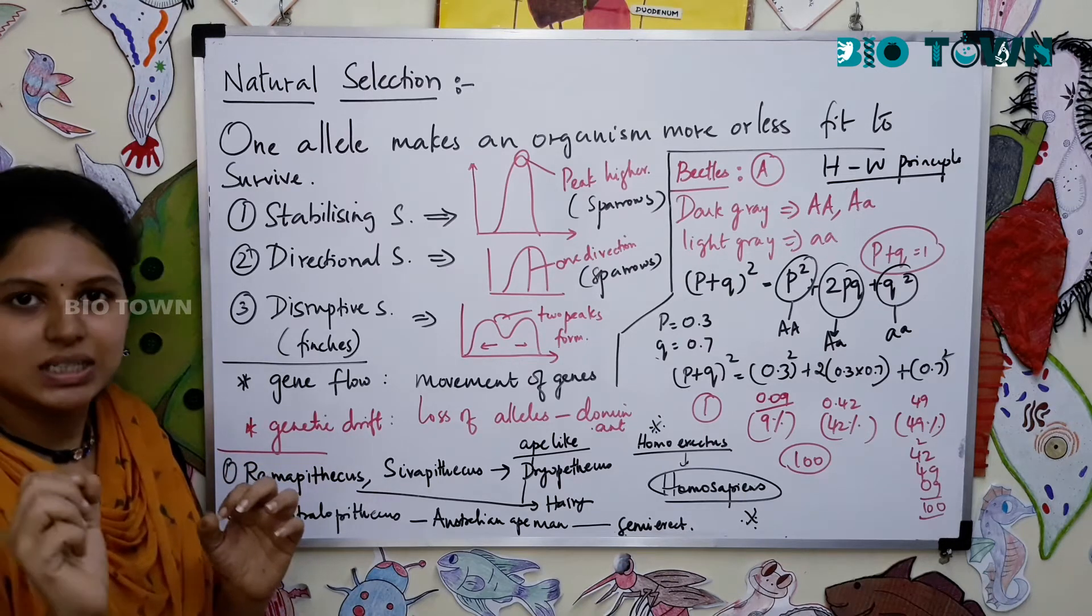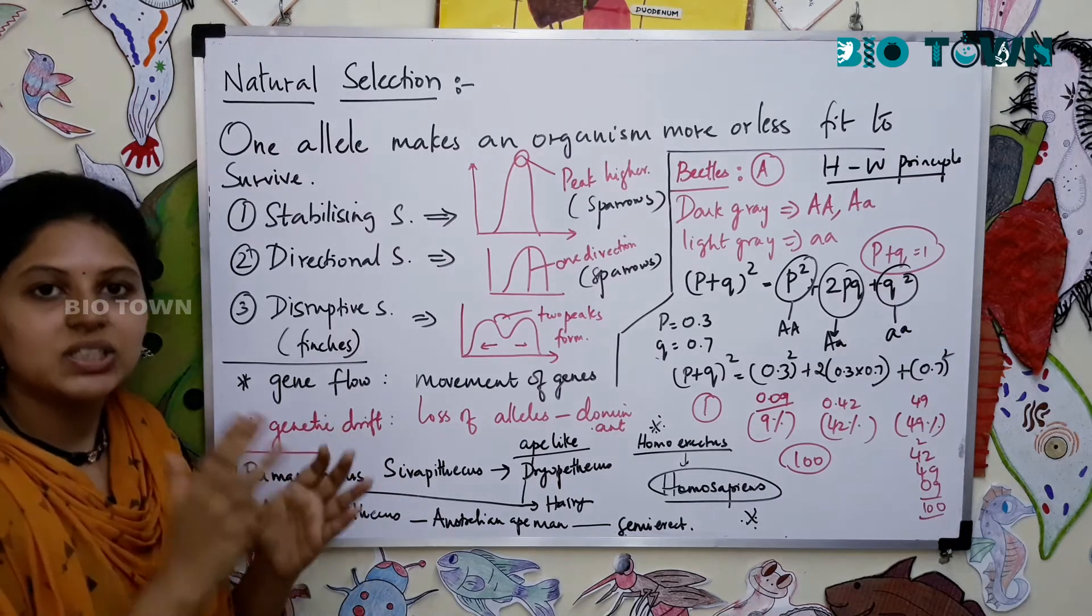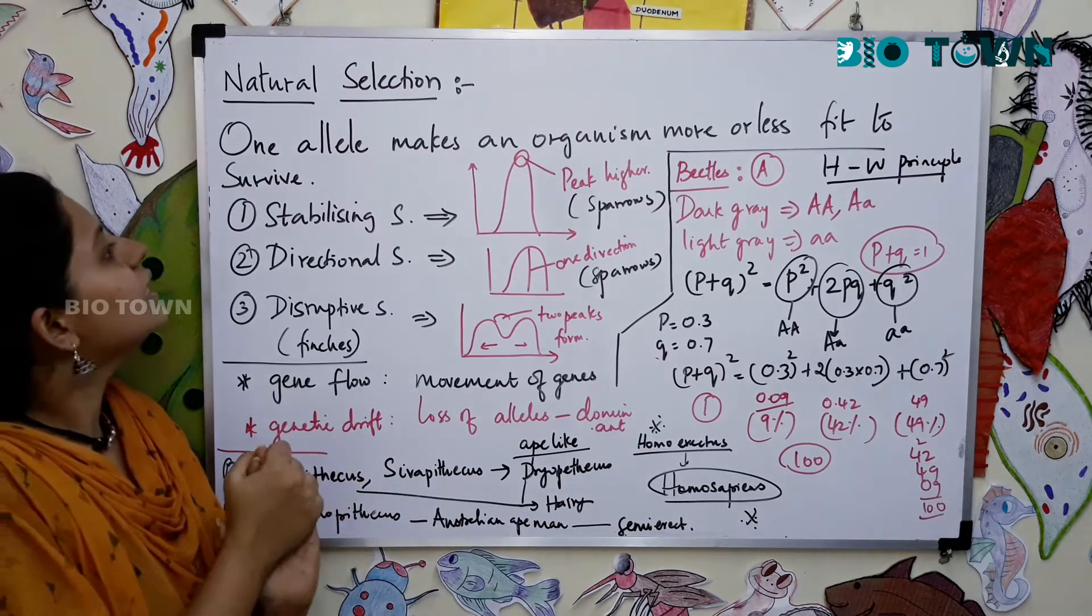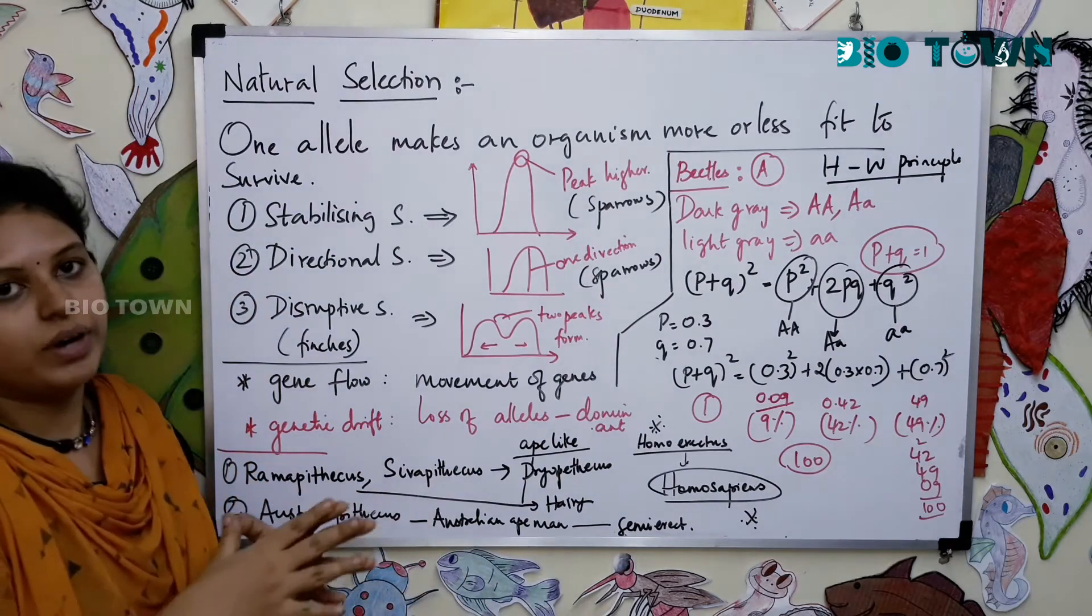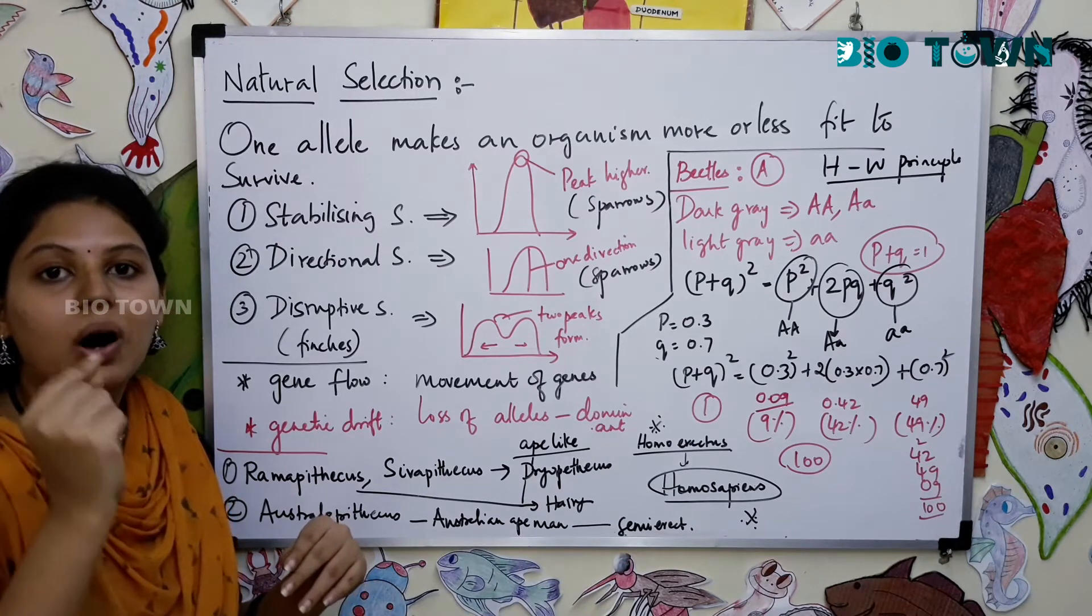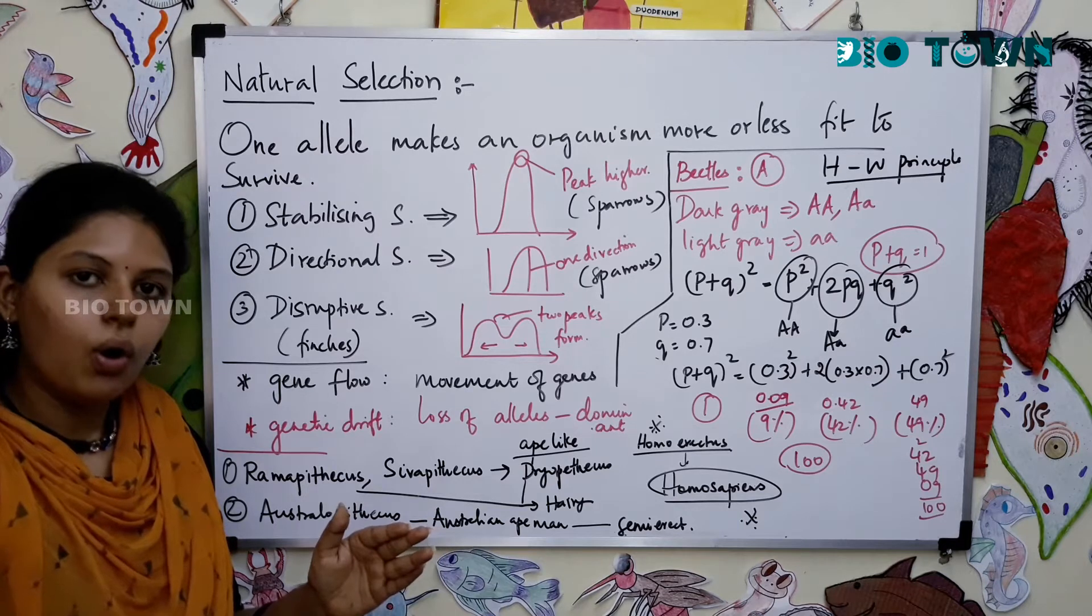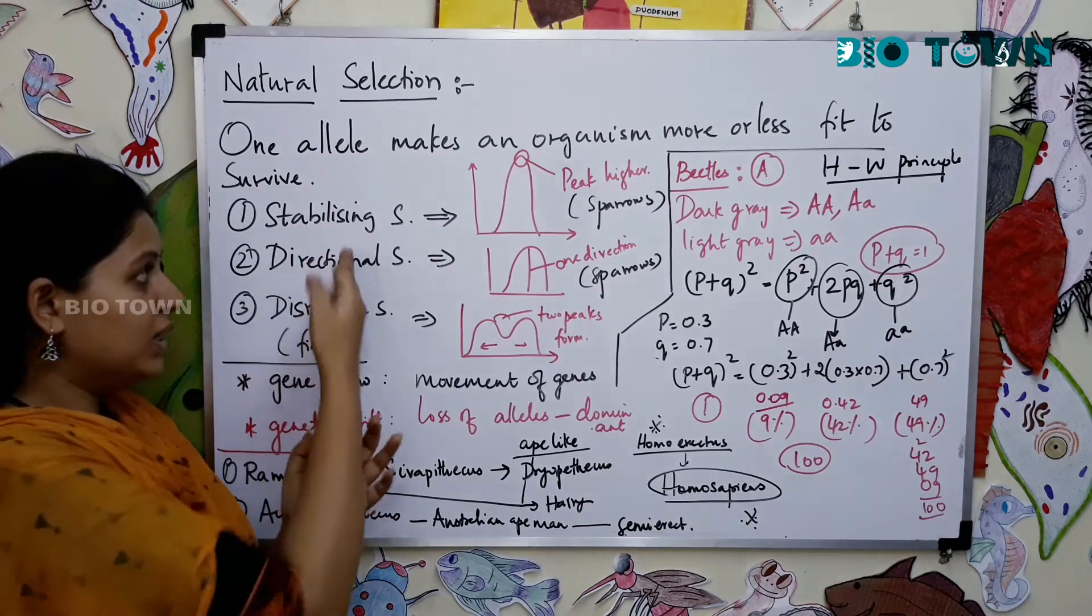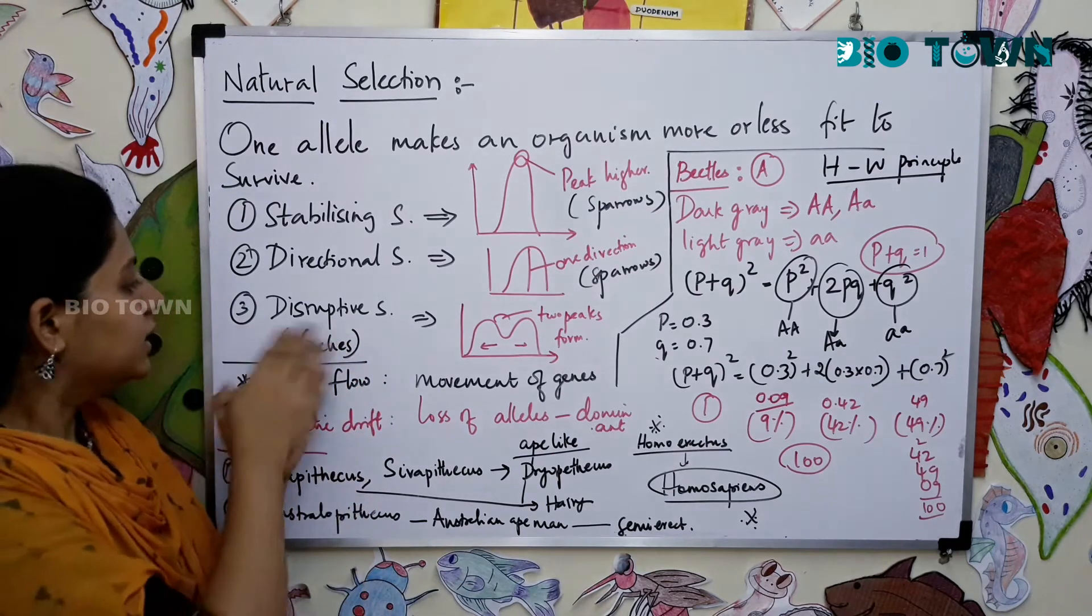Natural selection is that the nature has its own way of making survival of fittest. Nature selects the unusual on what to live, what not to live, whom to live and whom not to live. One allele makes an organism more or less fit to survive. One gene, one mutation, or one dominancy or recessiveness is totally enough to make an organism survive or die. In natural selection you have three different kinds: stabilizing selection, directional selection, and disruptive selection.